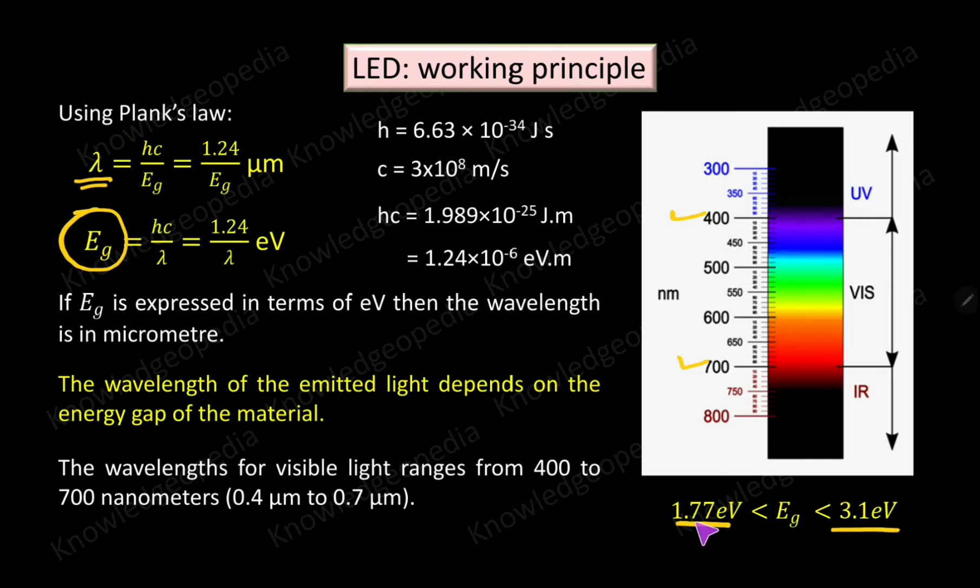This 1.77 electron volt is the energy gap of the material which is used to make an LED which will radiate the red light. And the energy gap of the material for an LED to radiate violet light is 3.1 electron volt.